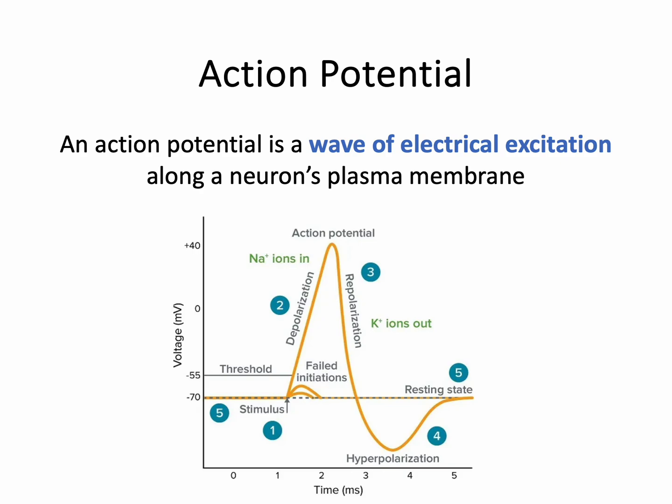An action potential itself is just a wave of electrical excitation along that membrane. The ions are going to move, that's going to lead to a change in the membrane potential, that's going to lead to this wave of electrical excitation called the action potential, and that's going to cause this signal. If you almost think about it like looking at a heart rate monitor and the sort of beeps going up — these peaks and lows — that's essentially what this looks like, this generation of electricity.